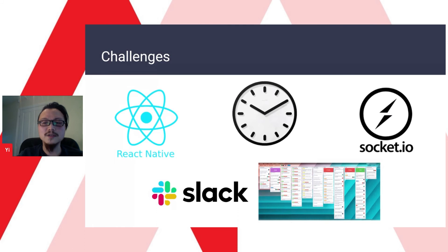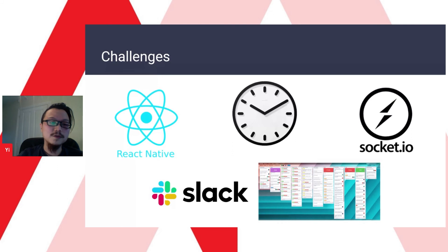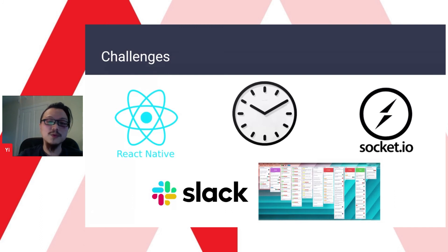Another problem was that Socket.IO is a bit inconsistent with configurations between different versions — different versions have different configurations to tweak. The latest version doesn't actually work with React Native, so we tried many different versions and ended up using version 2.0.4 on the server-side Socket.IO and version 2.1.11 on the front-end Socket.IO, which played nicely with React Native. We also have two backends for this project — one dedicated to Socket.IO — which seems to work better, and we're quite happy with the results.